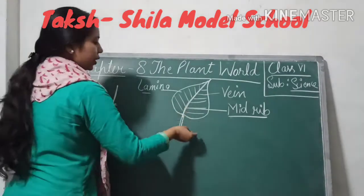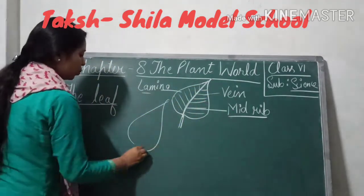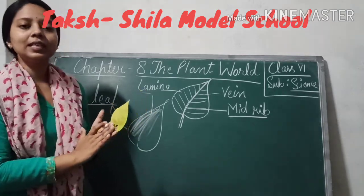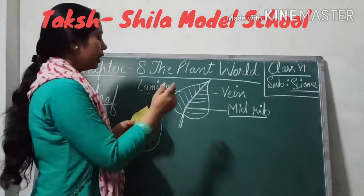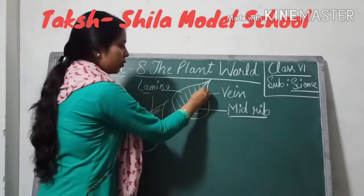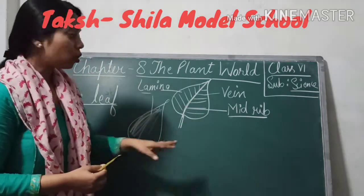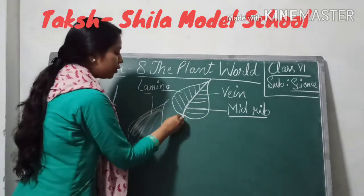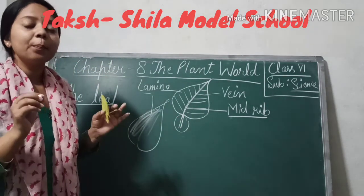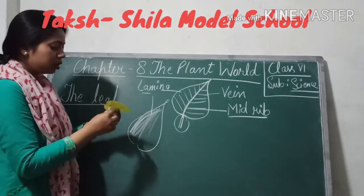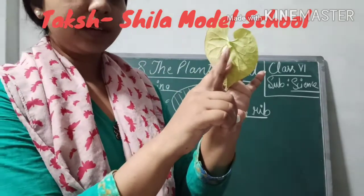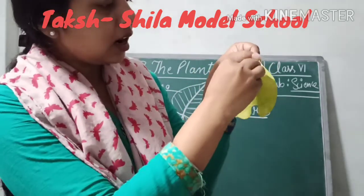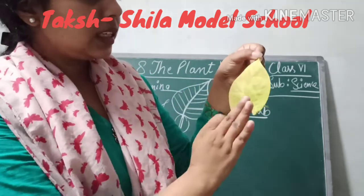So what is the structure basically? First of all, the basic surface — this is lamina. The edges and the whole surface — this is lamina. Next are veins. The lines in the middle are veins, and the one present in the center is the mid rib. The portion by which the leaf is attached to the plant is known as petiole.